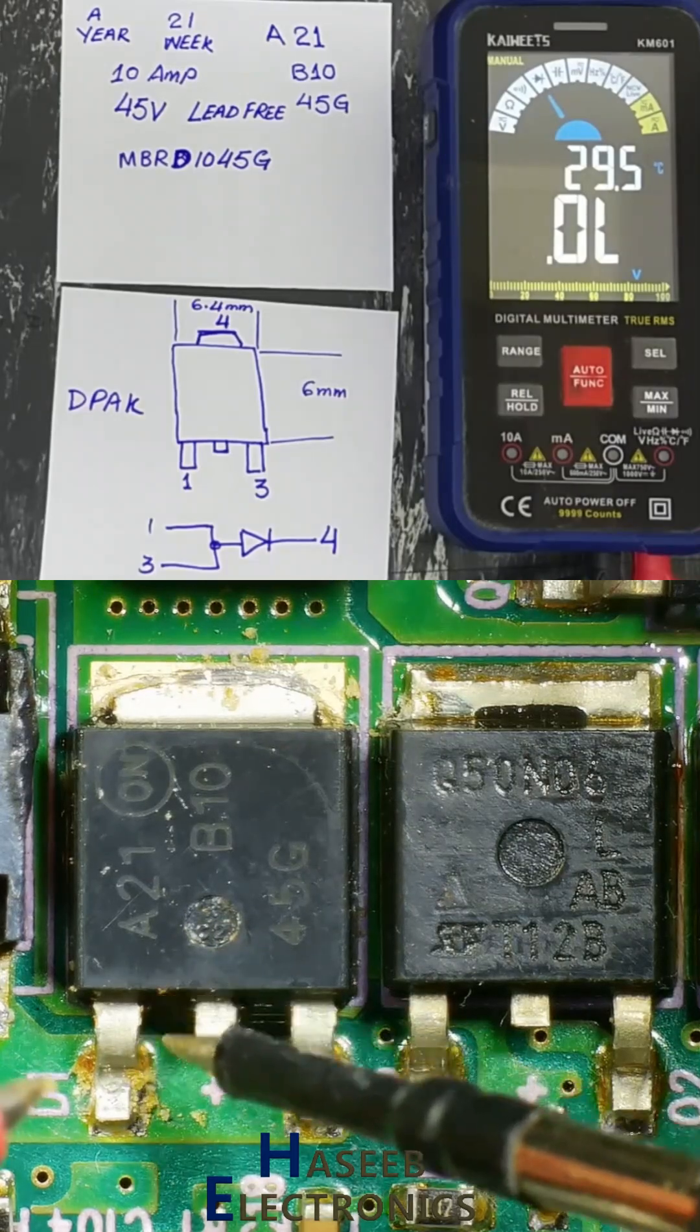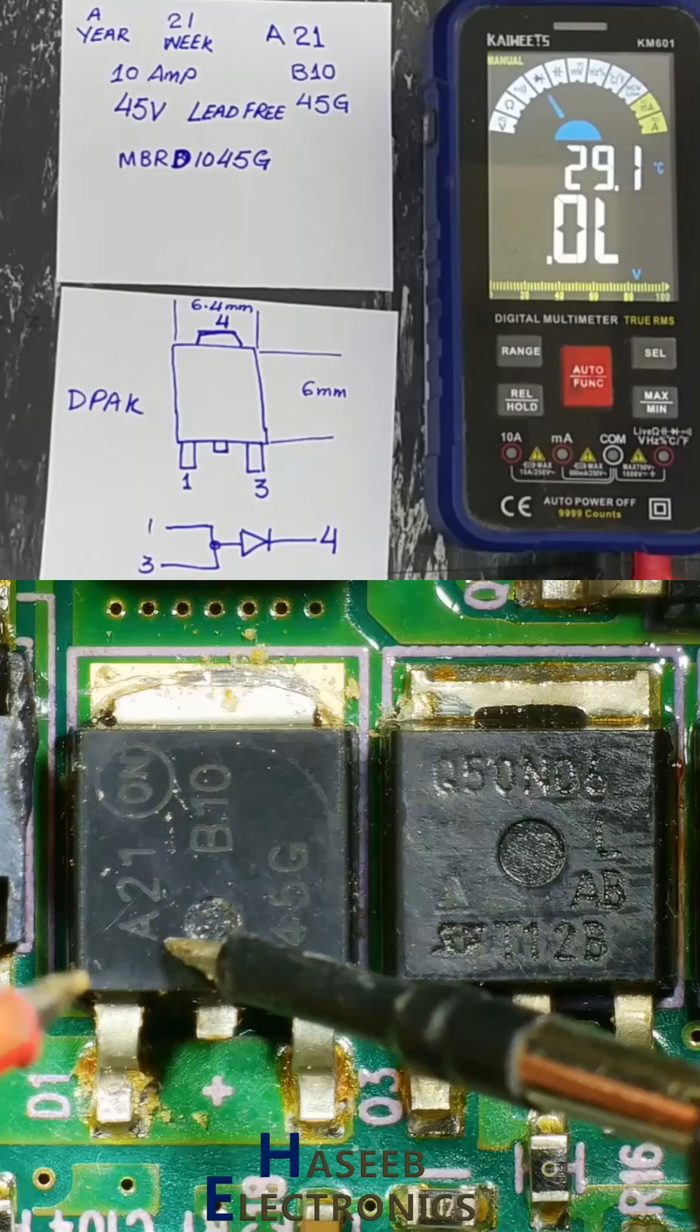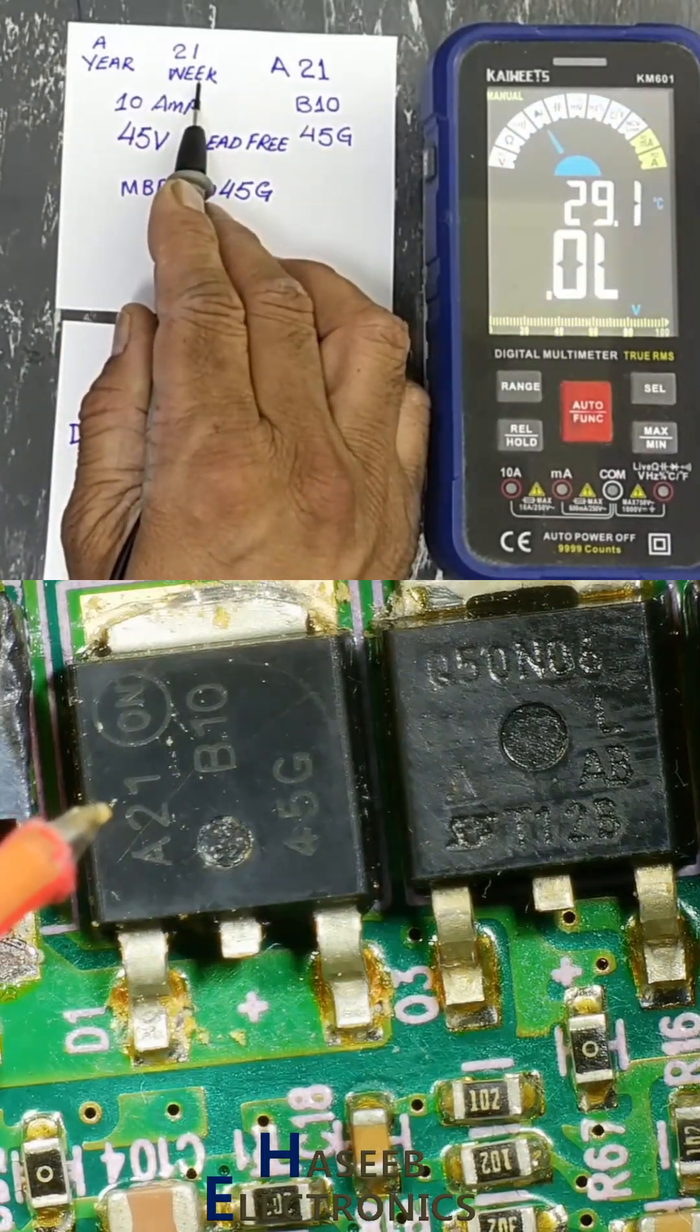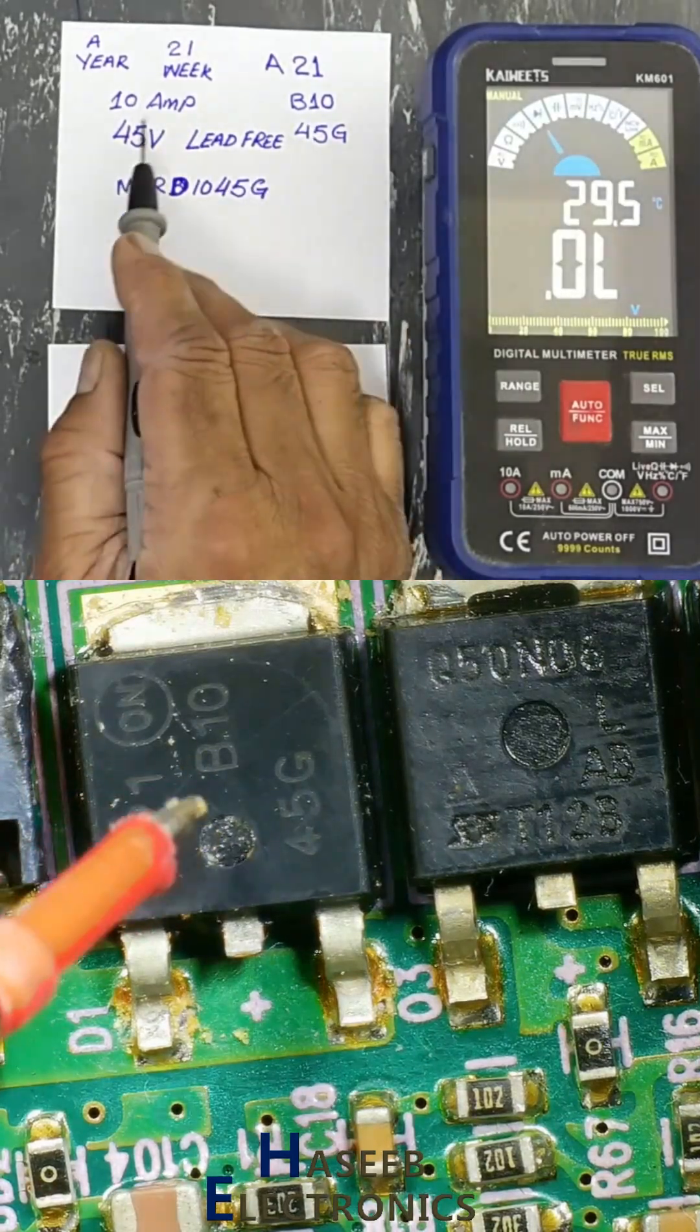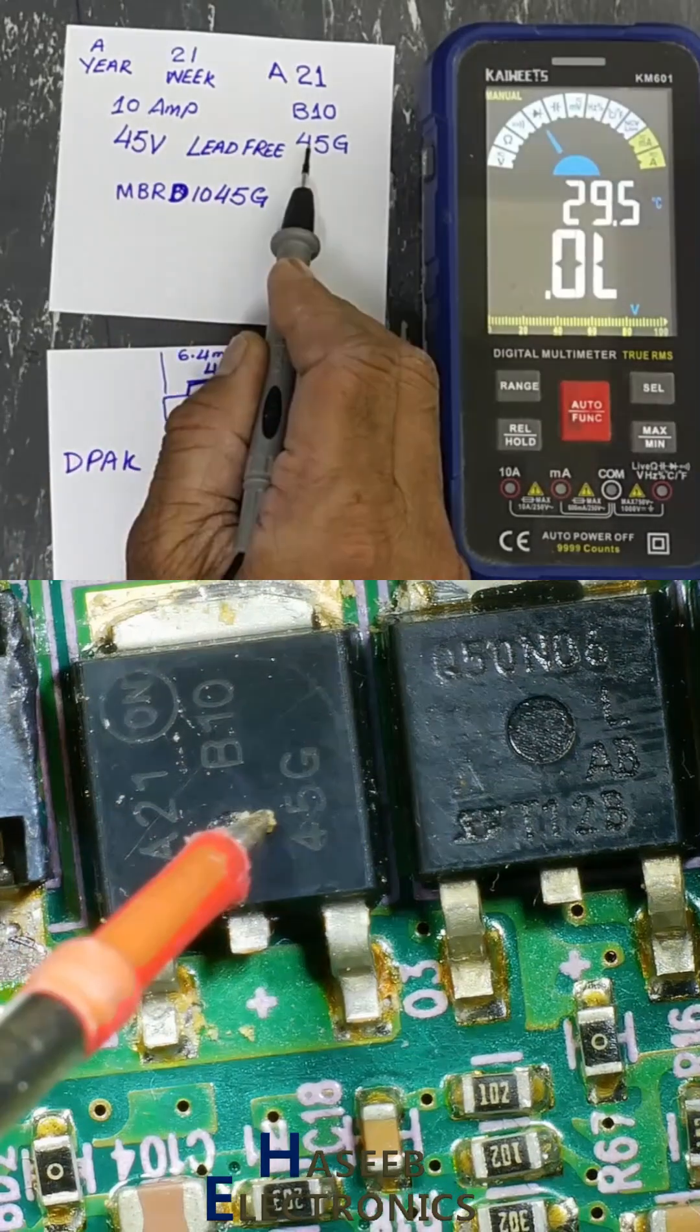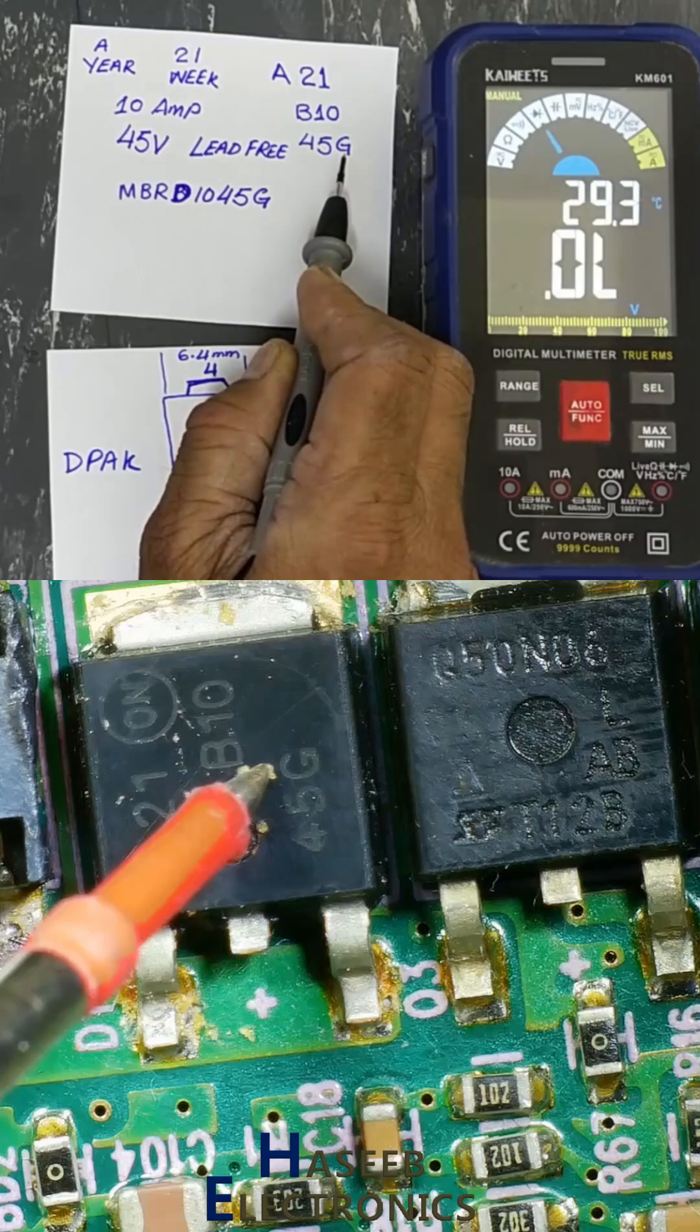Automotive grade switch mode power Schottky rectifier, marking A21. A year code 21, week number that means month and year. On Semiconductor manufacturer name, B10 that is ampere rating 10 ampere, 45V working voltage, G lead free PB free.